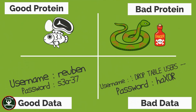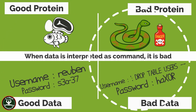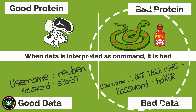So how does this relate to injection attacks? The protein is the data. Good protein is like good data. The concentrated protein in the venom is also data, but the body treats it as a command to shut down. Bad protein is a command that is masked as data. When data is interpreted as data, it is good. When the data is interpreted as a command, we have an injection attack.